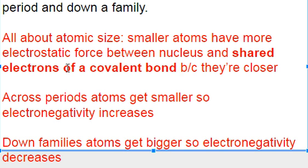So it's got to be in a molecule — a covalently bonded substance. Ionic doesn't count because in an ionic bond we call that energy lattice energy. So electronegativity is about the attraction for a shared pair of electrons, but it will have the same trend as ionization energy.